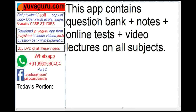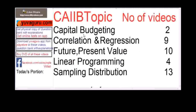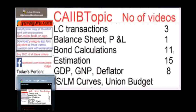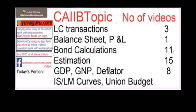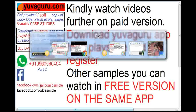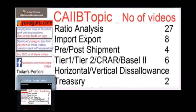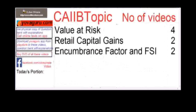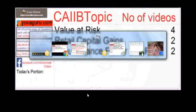The app contains question banks, notes, online tests, video lectures, and news. For CIB, topics include: capital budgeting, correlation, future and present values, linear programming, sampling distribution, balance of trade, buyers credit, suppliers credit, call and put options, ECGC, factoring, LC transactions, balance sheets, P&L, bond calculations, GDP, GNP deflator, IS-LM curves, union budget, Keynes theory, ratio analysis, import export, pre and post shipment, Tier 1 and Tier 2 capital, CRAR, Basel horizontal and vertical disallowances, value at risk, retail, and capital gains.